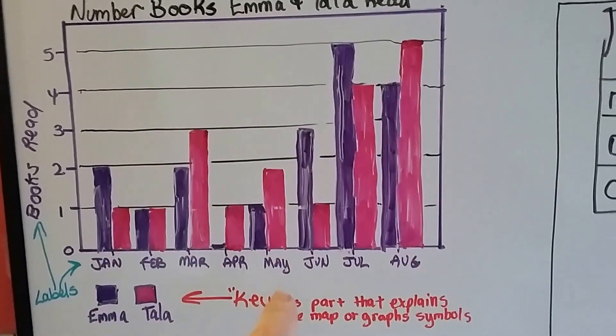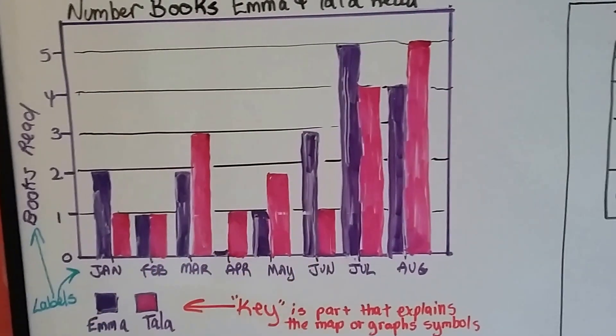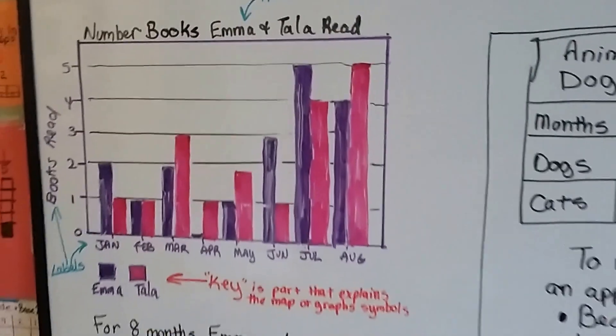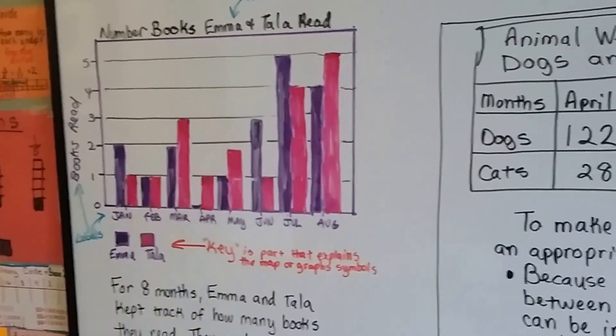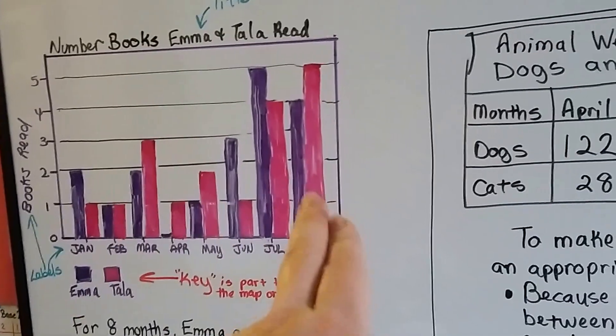We can even see that Tala didn't quite finish a book in May. So that's a double bar graph. It's comparing two things to each other over that bit of information.